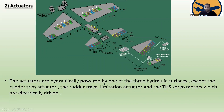The actuators are hydraulically powered by one of the three hydraulic systems, except the rudder trim actuators, the rudder travel limitation actuator, and the THS servo motor, which are electrically driven.